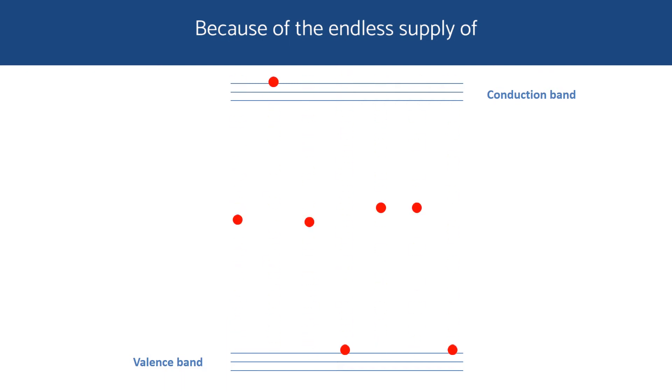Because of the endless supply of pump energy in the form of bias voltage, electron excitation and stimulation processes continue and are bettered.